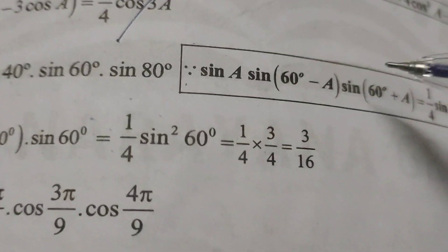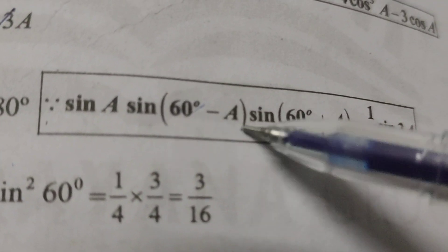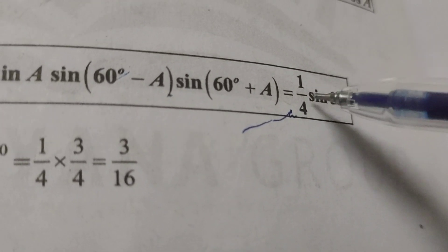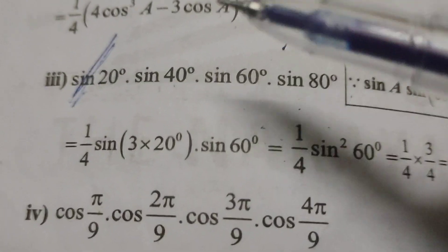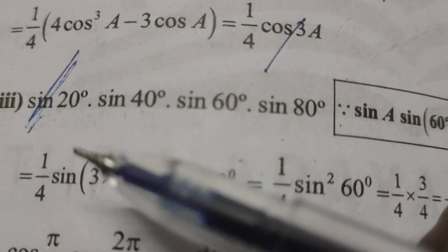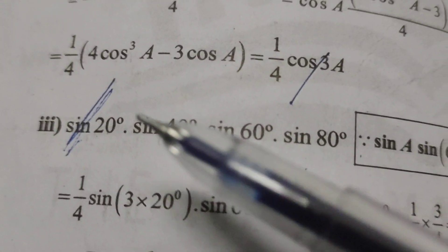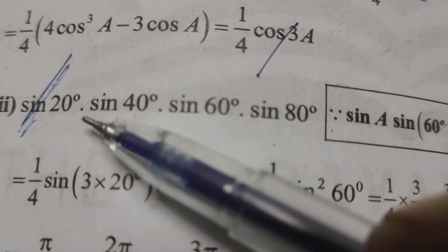Find this value using the formula sin A · sin(60° - A) · sin(60° + A), which equals 1/4 sin 3A. We arrange the given problem here. For 1/4 sin 3A, we use 3 times A where A equals 20 degrees.